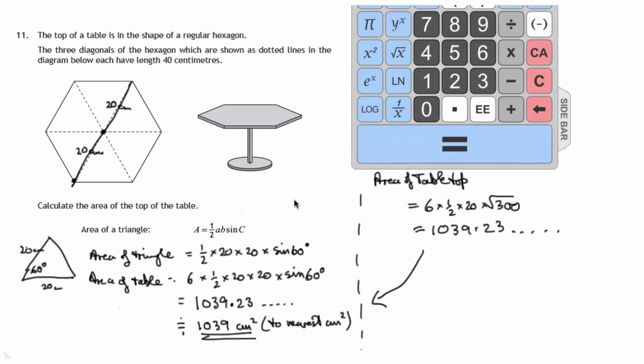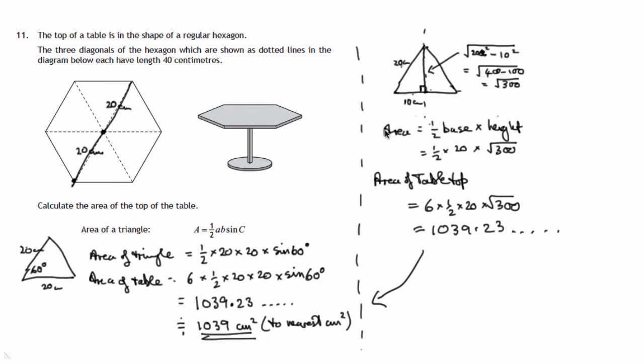So two completely different methods there. One using Pythagoras' theorem and this formula, area is a half base times height. And the other using a different formula, area is a half AB sine C.